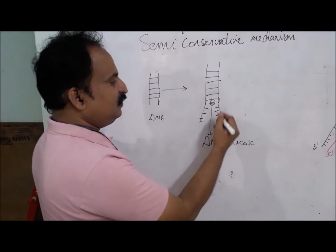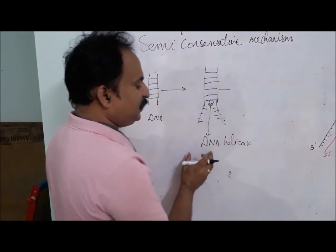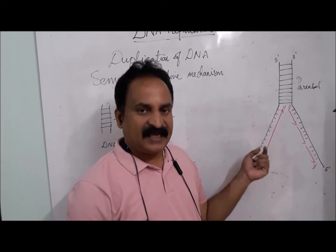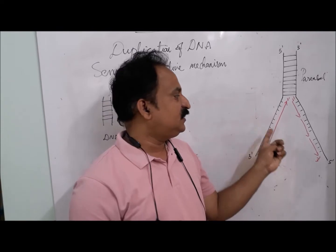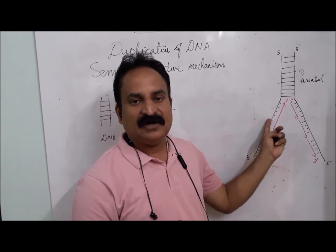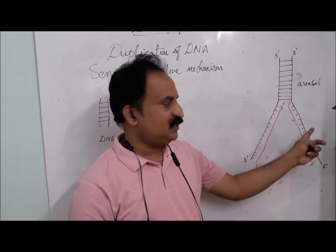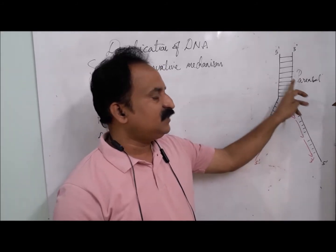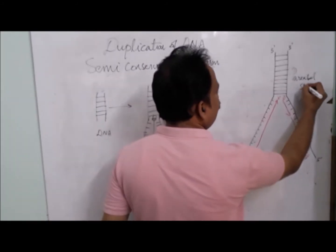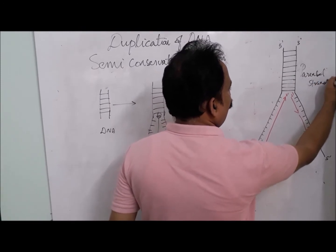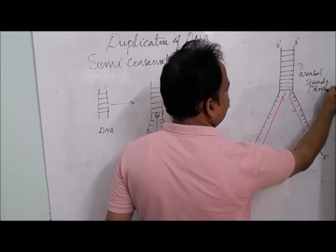When DNA helicase acts on the double-stranded DNA, a Y-shaped structure is formed. This is called the replication fork. The two separated strands are the parental strands, also called template strands.